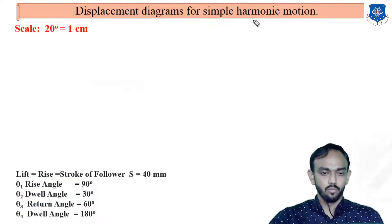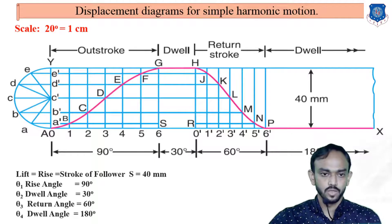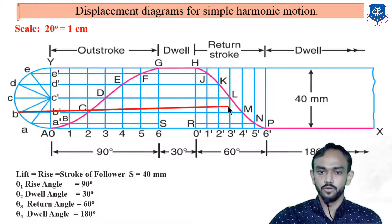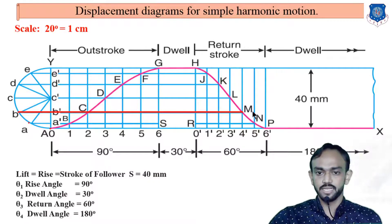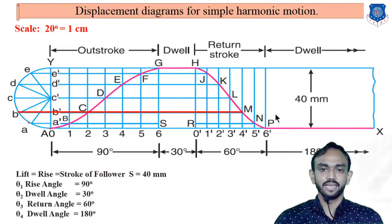These intersection points are what we use to make the curvature of the simple harmonic motion displacement diagram. The same points are obtained from the parallel lines. You draw lines from points 0, 1, 2 parallel to the base, and where they intersect the vertical divisions, you get the diagram points. This gives us the displacement diagram as per simple harmonic motion.